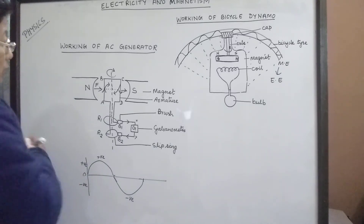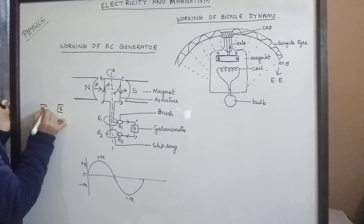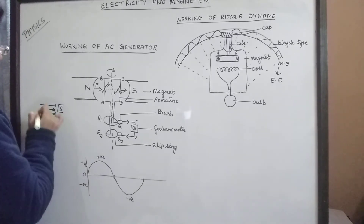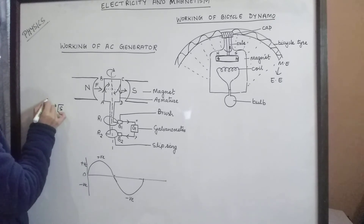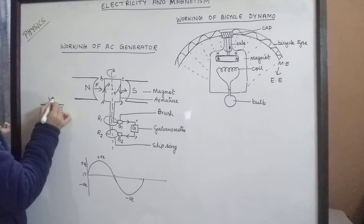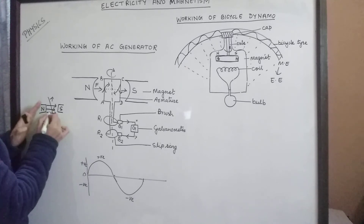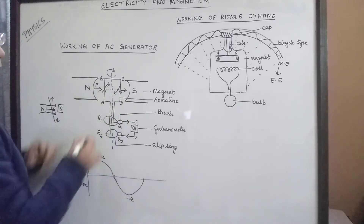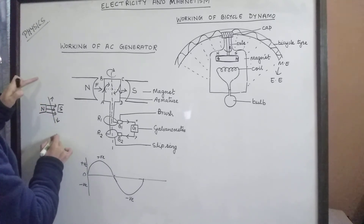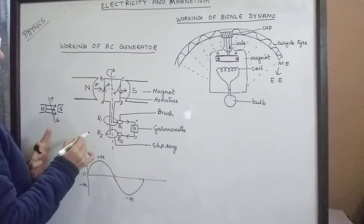From electromagnetic induction we know there is a magnetic field with a north pole and south pole, and magnetic lines of force are passing from north to south. In this magnetic field, if you make a closed coil move, current will be induced in the coil — this is electromagnetic induction. The same principle is working here. The only difference is that instead of a single insulated copper wire, here there is a rectangular frame of insulated copper wire — that is the only difference.